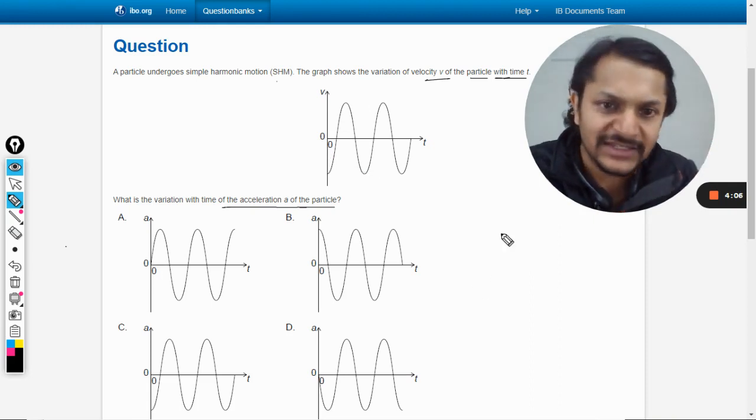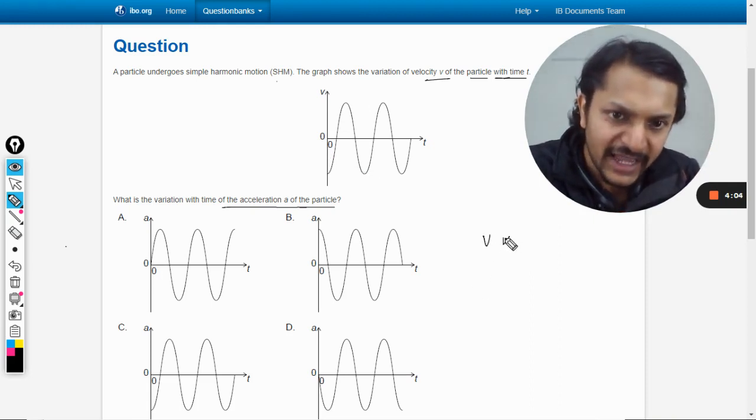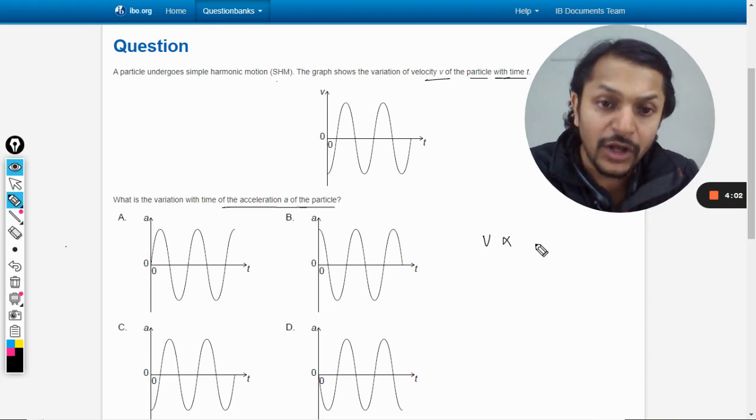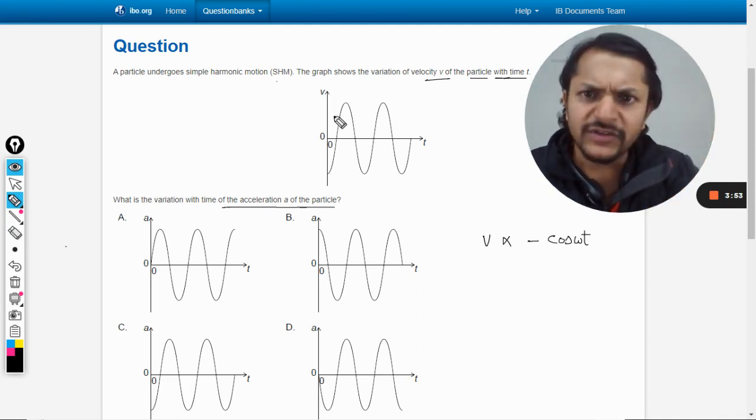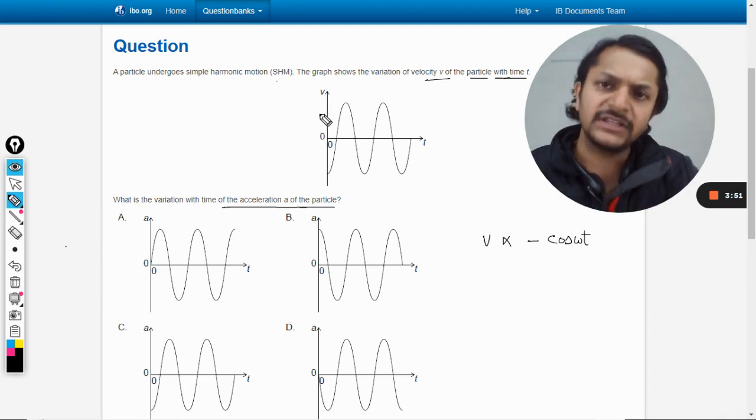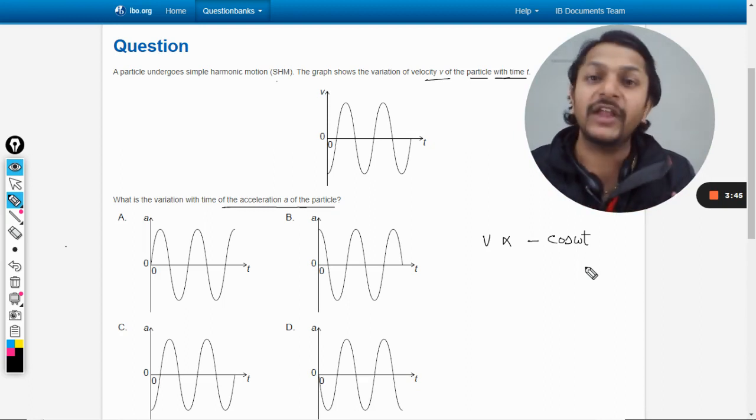The only method possible is that we will first see what is the variation of the velocity. We can say that as it is evident from the graph, velocity is directly proportional to negative of cos ωt. This is evident from the graph isn't it? The positive cos would start from the positive side, but this is the negative of it, so it's negative cos ωt.